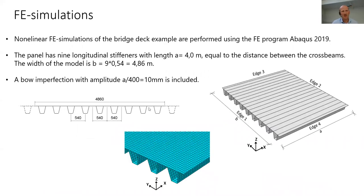We also did FEA simulations to get the correct answer for this problem. Nonlinear FEA simulations of the bridge deck were performed using the ABAQUS 2019 program. The panel we checked had 9 longitudinal stiffeners with length of 4 meters, equal to the distance between the cross-beams, and the width of the model was almost 5 meters. Bow imperfection is also included.